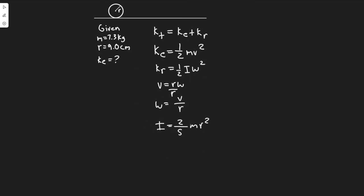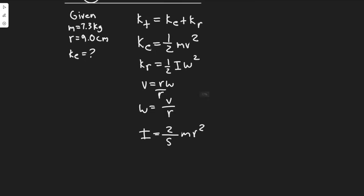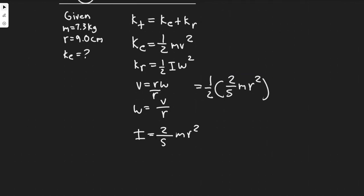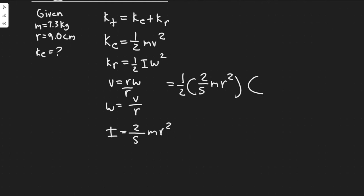If we want to solve for the rotational kinetic energy, it's just a matter of plugging in these values. So 1 half times the inertia, which is 2 over 5 m r squared, and then multiply this by v over r squared, because we're doing omega squared.